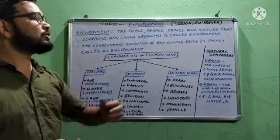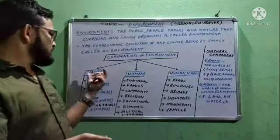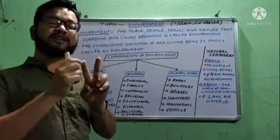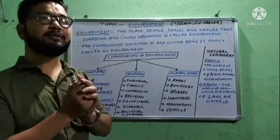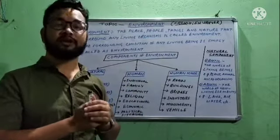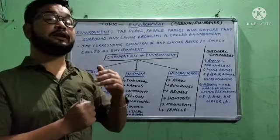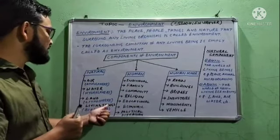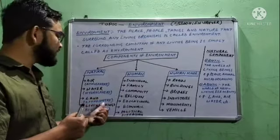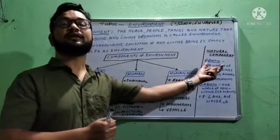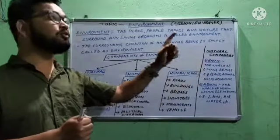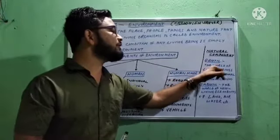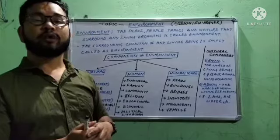Next we will go to natural components in more detail. In natural components of the environment, there are two parts: one is the biotic part, and one is the abiotic part. Biotic means which have life — some natural components have life and some do not. Living things are the biotic component of the natural environment. The world of living beings is called the biotic components of the environment.